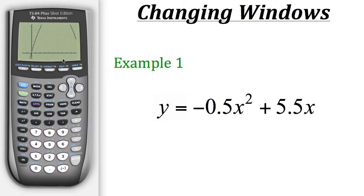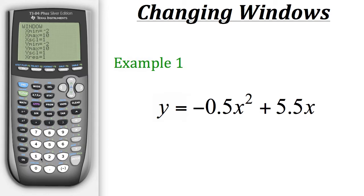Now let's move further along the x-axis so we can see the other x-intercept. We'll go to window — at the moment our x max is 10, but that's not far enough because we can't see the full right side of the parabola. Let's try 15 and see how that looks.